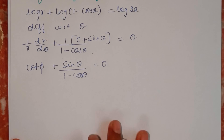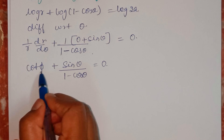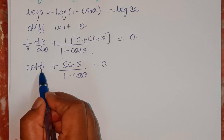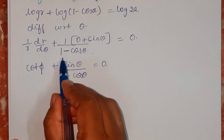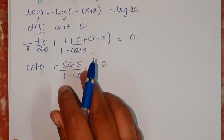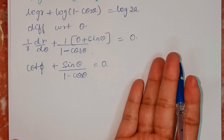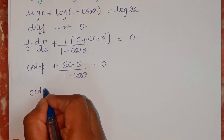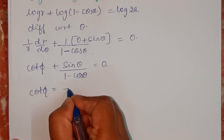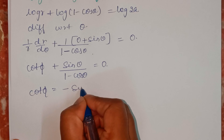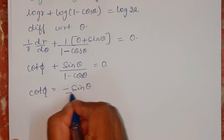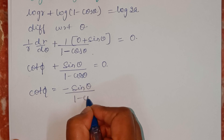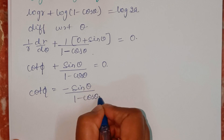Now we have to find cot φ. Sending the sin theta term to the other side, it becomes: cot φ equals minus sin theta divided by (1 minus cos theta).